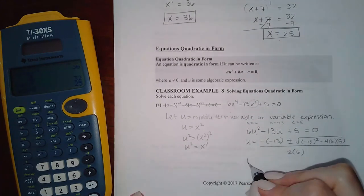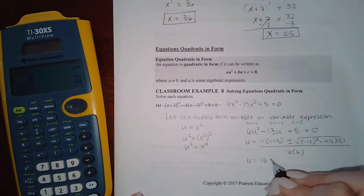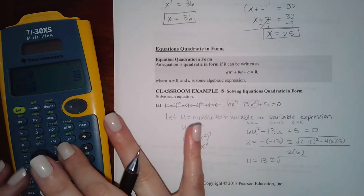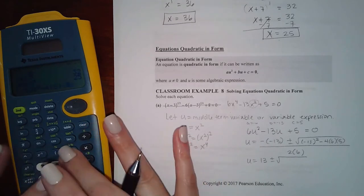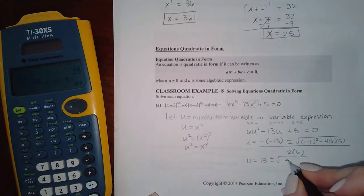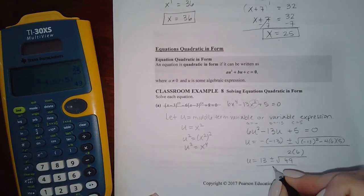So then let's see, simplify that. We get 13 plus or minus, hmm, I'm not sure about the inside of that square root, so let me jot that in my calculator. And I get 49 over 12.